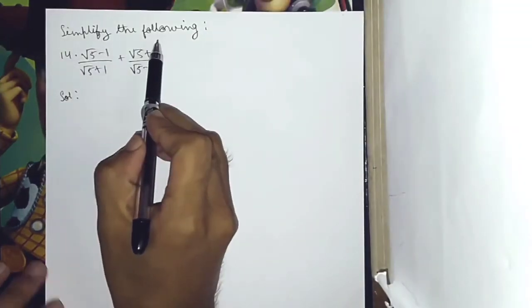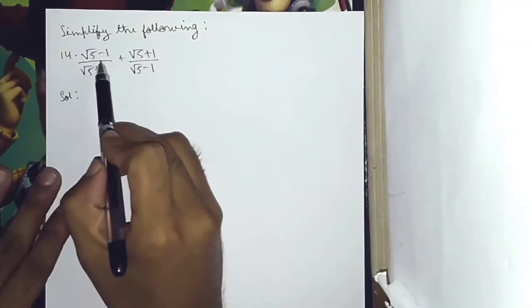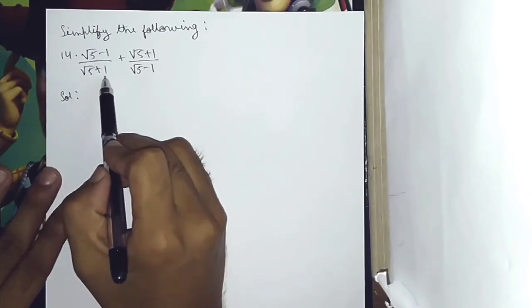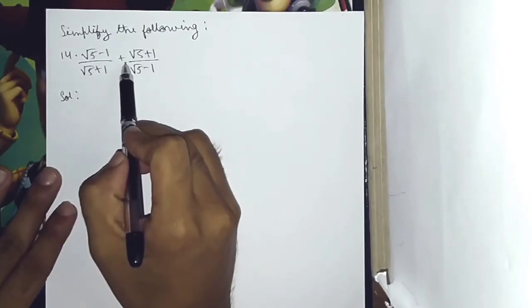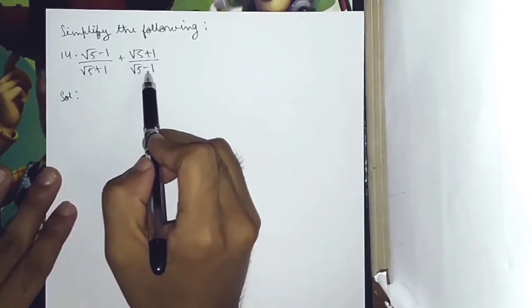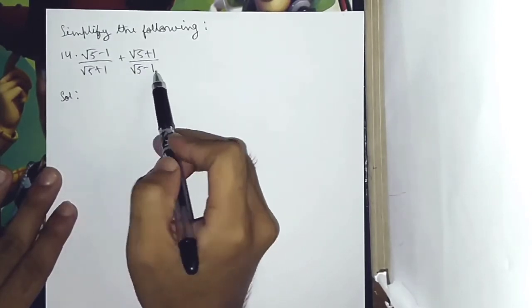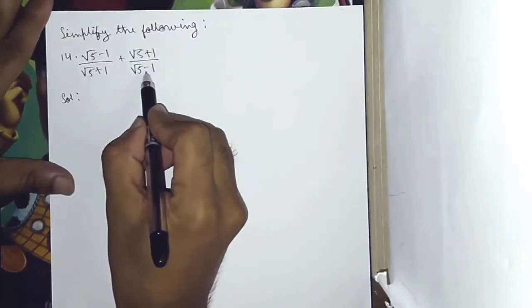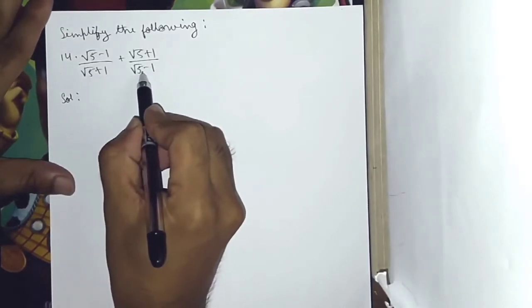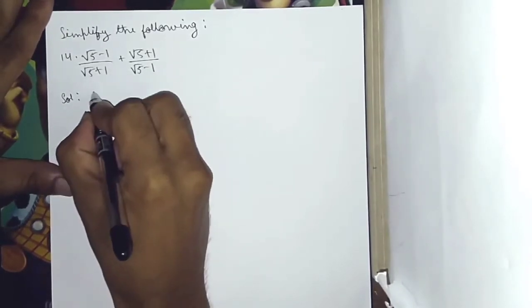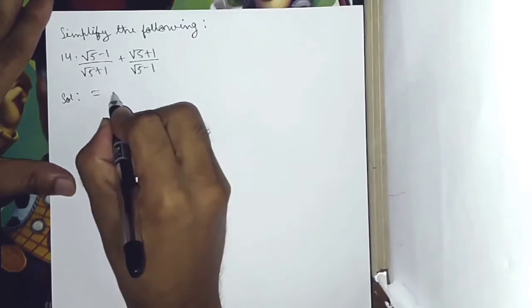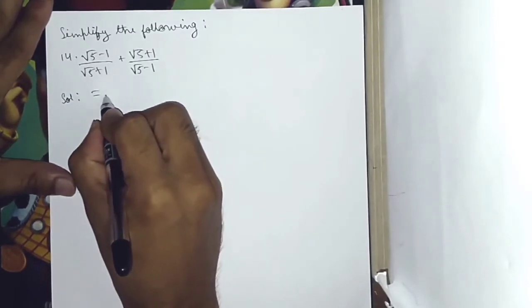Simplify the following. Number 14: root 5 minus 1 by root 5 plus 1, plus root 5 plus 1 by root 5 minus 1. So this is equal to...